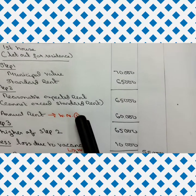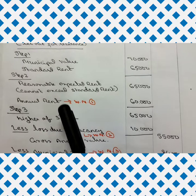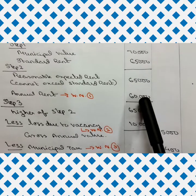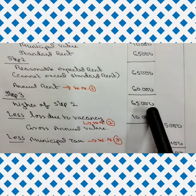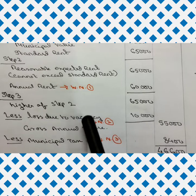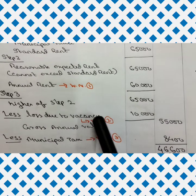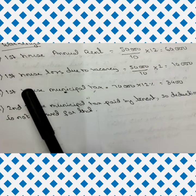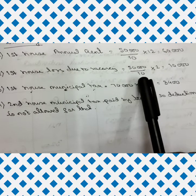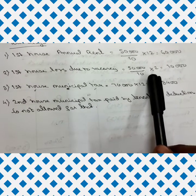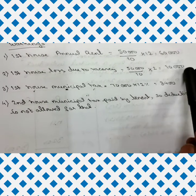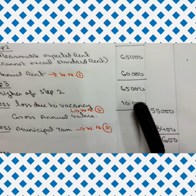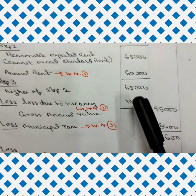Step 3 — higher of Step 2: reasonable expected rent is 65,000 and annual rent is 60,000; the higher is 65,000. From this, deduct loss due to vacancy. Working note: loss due to vacancy = 50,000 divided by 10, multiplied by 2 months = 10,000. Deducting 10,000 from 65,000 gives a Gross Annual Value of 55,000.